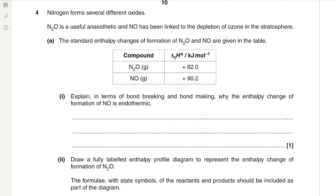Question 4: nitrogen forms several different oxides. N₂O is a useful anaesthetic and NO has been linked to the depletion of ozone in the stratosphere. The standard enthalpy changes of formation of N₂O and NO are given in the table. An endothermic reaction is one in which energy is taken in from the surroundings, meaning more energy is used in bond breaking than is released in bond making, which is why the enthalpy change of formation of NO is endothermic.